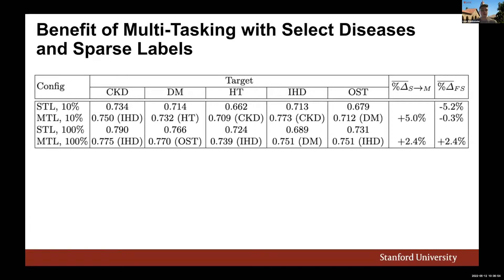We still hypothesized there should be some benefit to multitask learning in certain cases, so we developed a validation strategy to determine which diseases are best trained together. We also examined whether multitask learning helps in the sparse label regime. With 10% of training labels, multitask learning shows a 5% improvement over single task learning.